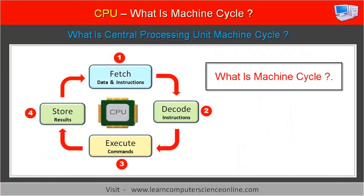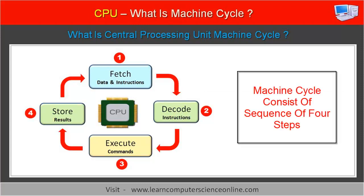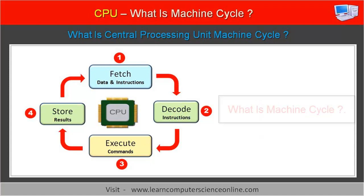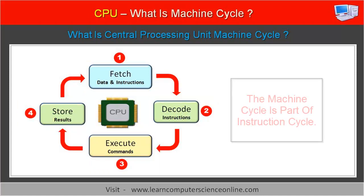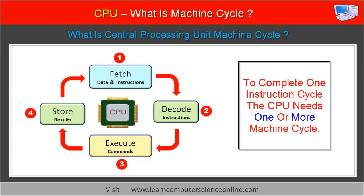In order to execute a program instruction, the CPU repetitively performs a sequence of four steps. This sequence of four steps is called a machine cycle. The machine cycle is executed in four steps. These four steps include the CPU operations such as fetch, decode, execute, and finally store. The machine cycle is a part of the instruction cycle. In order to complete one single instruction cycle, the CPU might need either one or more machine cycles, which depends upon the complexity of the program instruction.